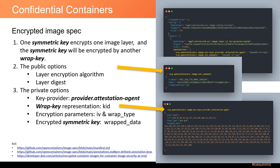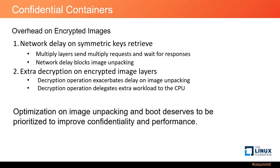The agent needs to send the private options to the service for every encrypted layer to retrieve the symmetric keys. Obviously, the network communication is too frequent. We can find the bottlenecks in encrypted images in CCs. The first is network delay on symmetric key retrieval: multiple image layers send multiple requests and wait for responses, and the network delay blocks image unpacking. The second is extra decryption operations on encrypted image layers, which can exacerbate delay and delegate extra workload to the CPU. Given this overhead, optimization on image unpacking and boot-up deserves to be prioritized.